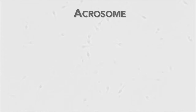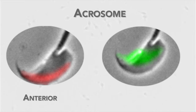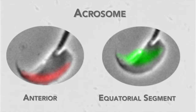The acrosome is divided into two main regions: the anterior acrosome, which is seen in red in this image, and a second main region called the equatorial segment, seen in green.